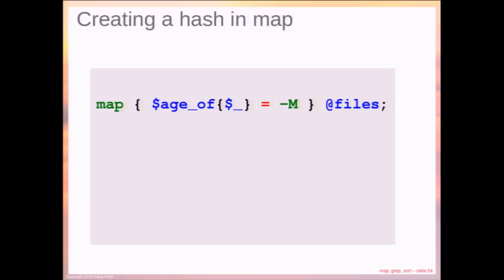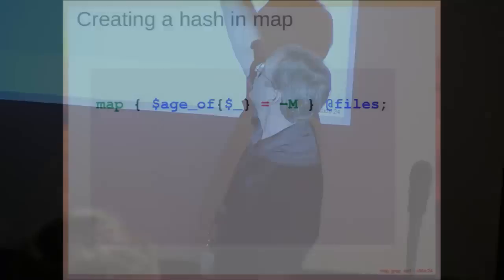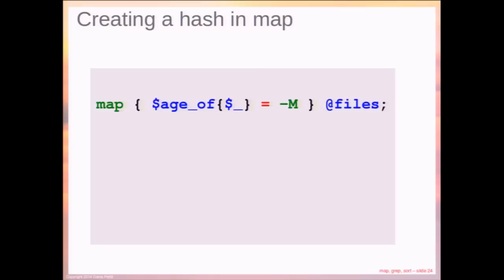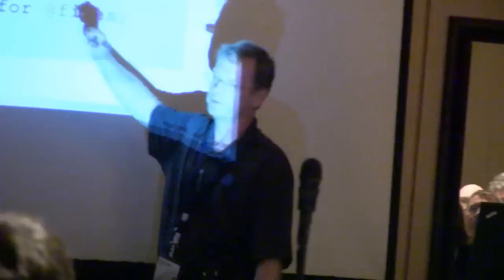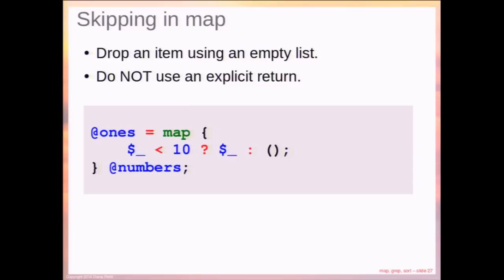Here we show creating a hash using a map. We have our list of files, we perform the minus-m file operator on it to get the age of the file, and we create a hash called 'age' where the key is the name of the file. Here's a foreach that does the same thing, and an inside-out foreach — where 'for' is actually a synonym for 'foreach'. If you want to skip an element in a map, essentially dropping elements from the list, you can do that by having the code block evaluate to an empty list.